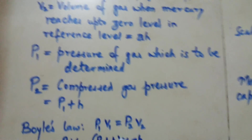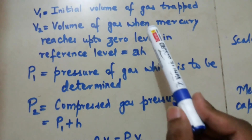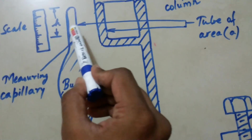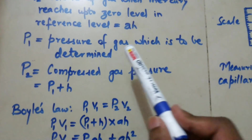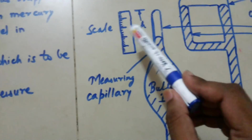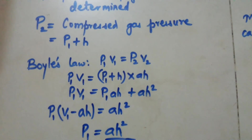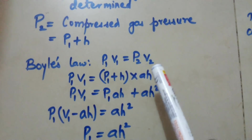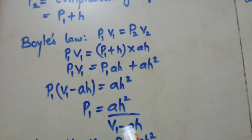Let us see the calculation. V1 is the initial volume of the gas trapped. V2 is the volume of the gas when the mercury reaches up to zero level in the reference level, so V2 is equal to A times H. P1 is the pressure of the gas to be determined. P2, the compressed gas pressure, is equal to P1 plus H. Since this gas follows Boyle's law, P1 times V1 equals P2 times V2. Substituting, we finally get P1 equals A H squared divided by (V1 minus A H).